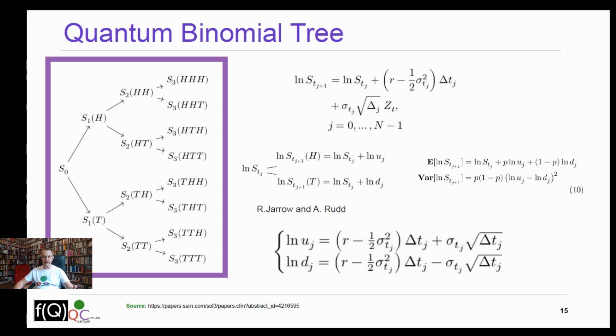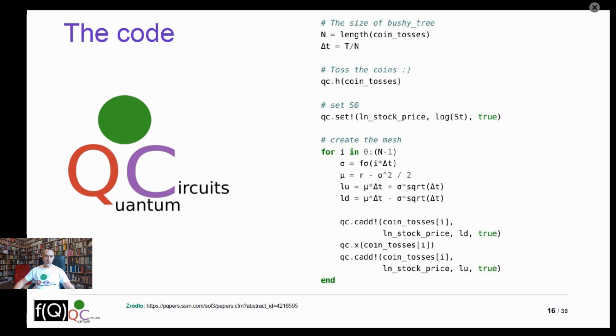Then we use the quantum binomial tree algorithm. For each time step, we allow the underlying to go up or down depending on the coin toss: up for heads and down for tails. And we choose the parameter u and d so that the generated Bernoulli distribution agrees with the zeroth, first, and second moments.